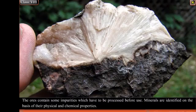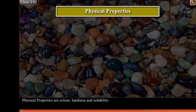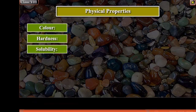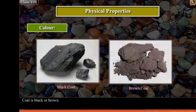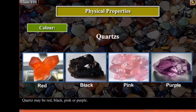Minerals are identified on the basis of their physical and chemical properties. Physical properties are colour, hardness, and solubility. Colour: Coal is black or brown. Quartz may be red, black, pink, or purple.